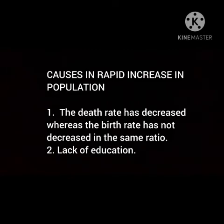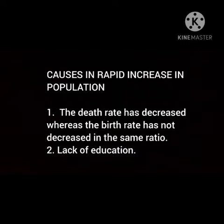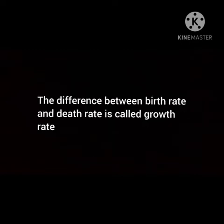What are the causes of rapid increase in population? The first cause is that the death rate has decreased whereas the birth rate has not decreased in the same ratio. The second point is lack of education. Due to advancement in the field of medicines, the death rate has decreased rapidly, whereas the birth rate has not decreased in the same ratio. Due to lack of education, birth rate cannot be controlled. The difference between birth rate and death rate is called growth rate.